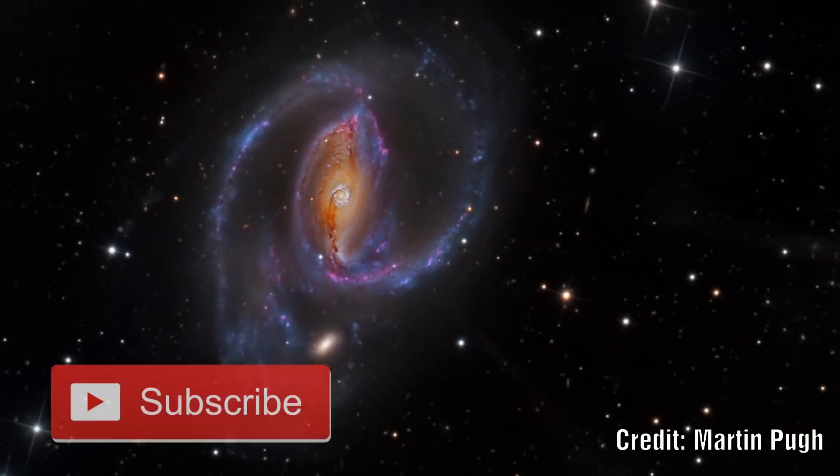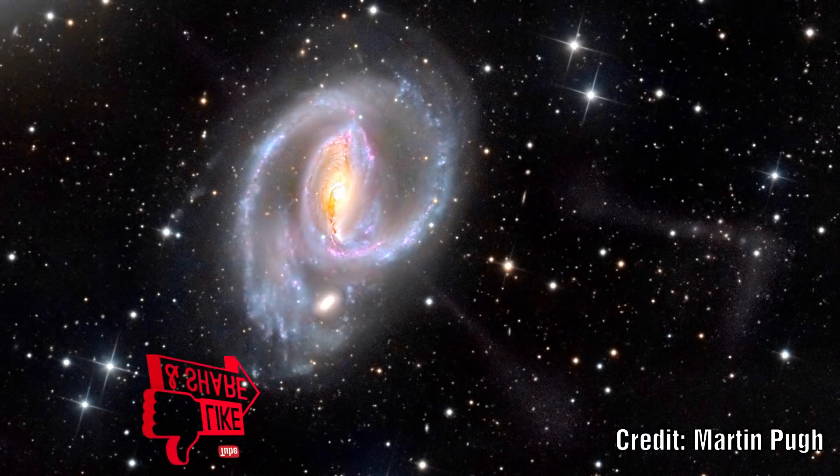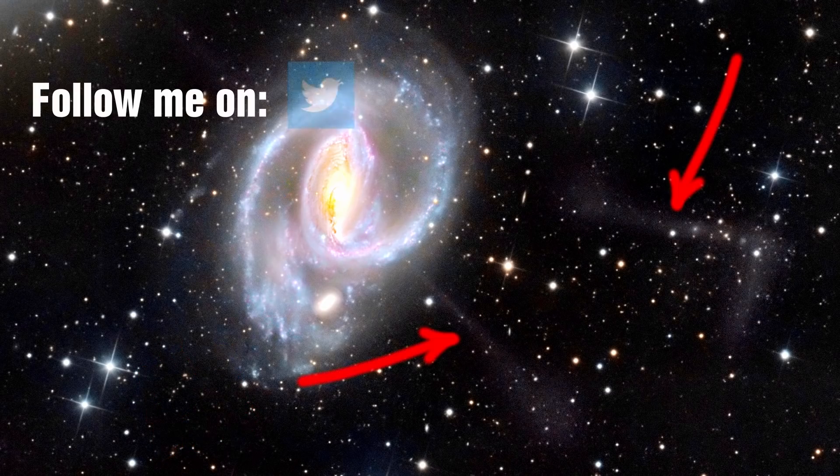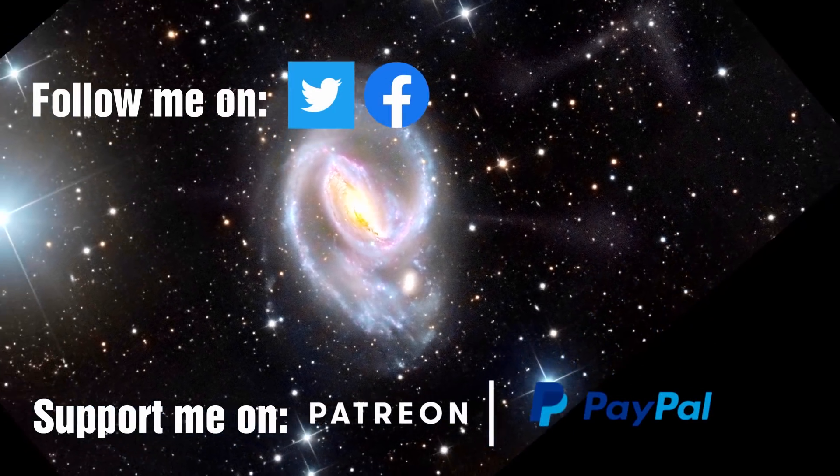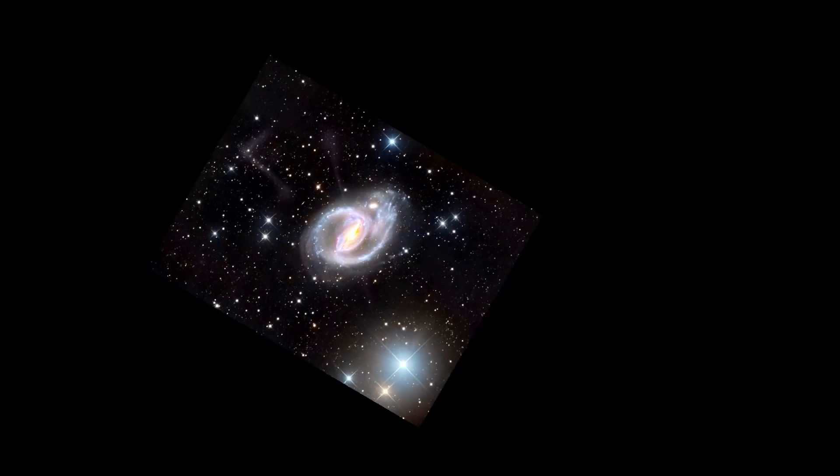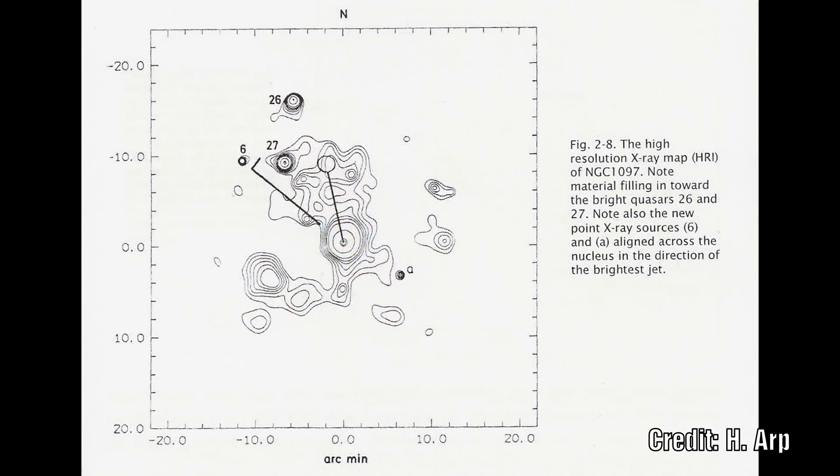This galaxy has the most extensive, low-surface brightness optical jets of any known galaxy. On one side, just between the bright optical jets, is a concentration of 5 or 6 bright quasars. Zooming out a little we can see a concentration of about 40 quasars which seem to be concentrated around this galaxy.